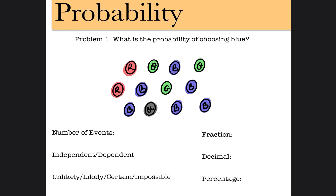Let's go over four probability questions together. This first one says, what is the probability of choosing blue? With probability, you take the specific ask over the total. So they're asking for blue.